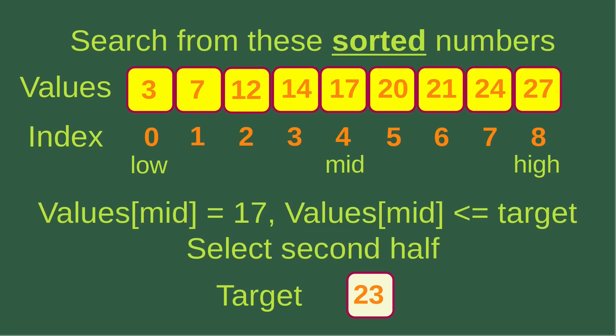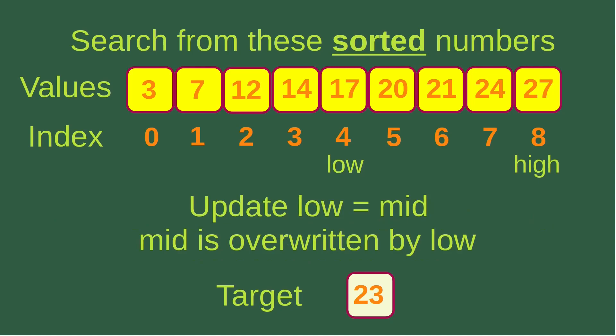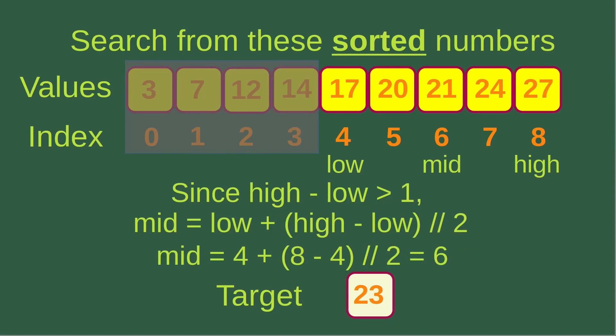The mid-index corresponds to 17, which is smaller than or equal to the target of 23. So I select the second half of the array by updating the low index to become the mid-index — low becomes four and high remains eight. After this assignment, the mid-index is overwritten. We now have five elements to search, corresponding to the right half of the original array.